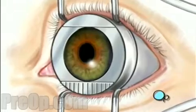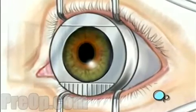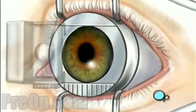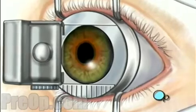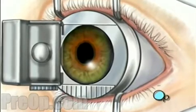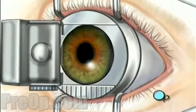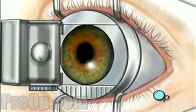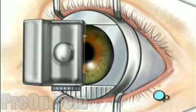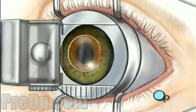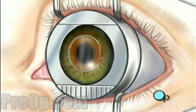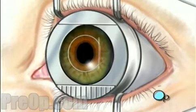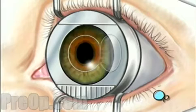When the operative field is numb, the doctor will use an automated microsurgical instrument called a microkeratome. This tiny instrument will carefully create a thin corneal flap, which remains hinged to the eye. Underneath this flap, the inner layer of the cornea, called the stroma, is exposed.